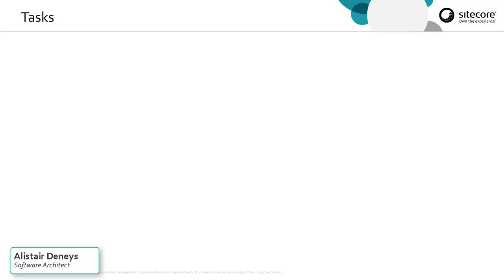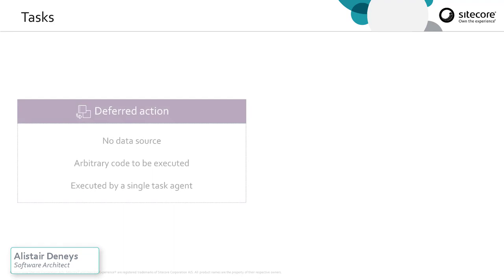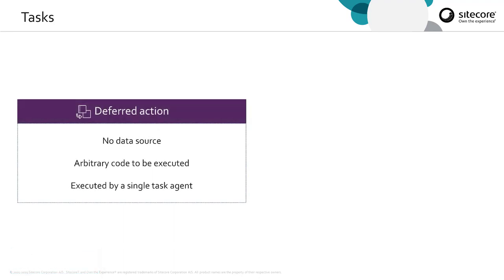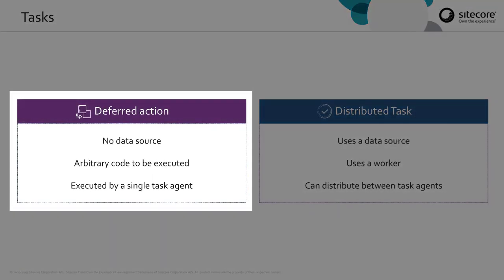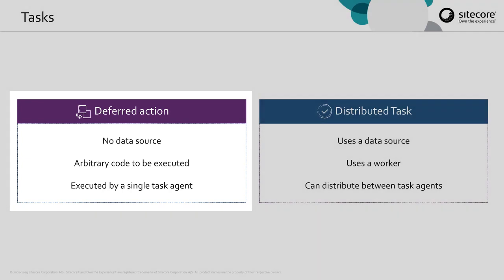Task agents execute tasks. In the Cortex Processing Engine, we have two different kinds of tasks. There is a deferred action and a distributed task. The deferred action is a single piece of code that needs to be run, and it will be run on a single task agent. There's no data source, but you can still integrate with other things like external services.